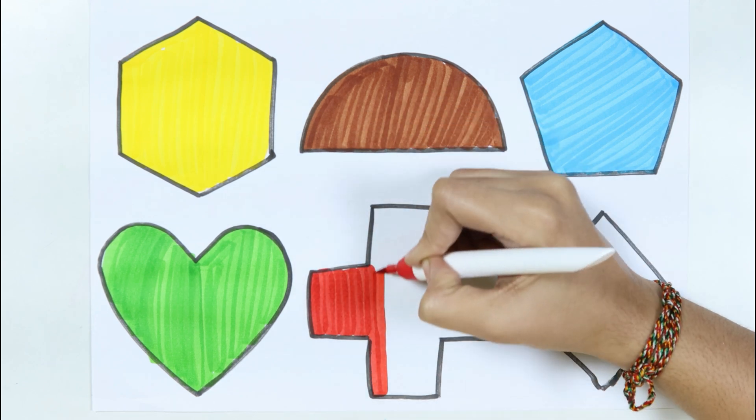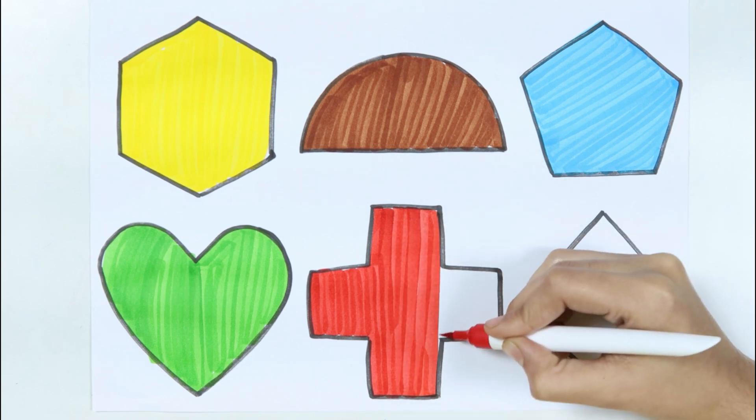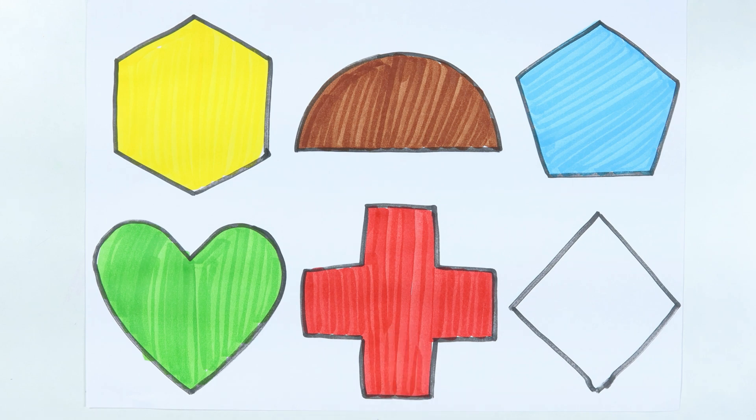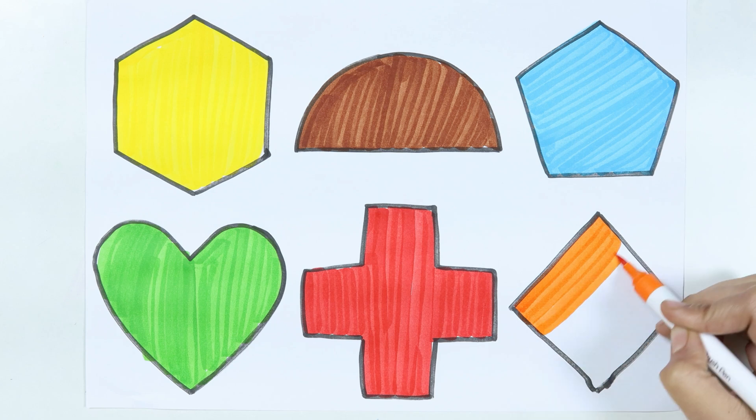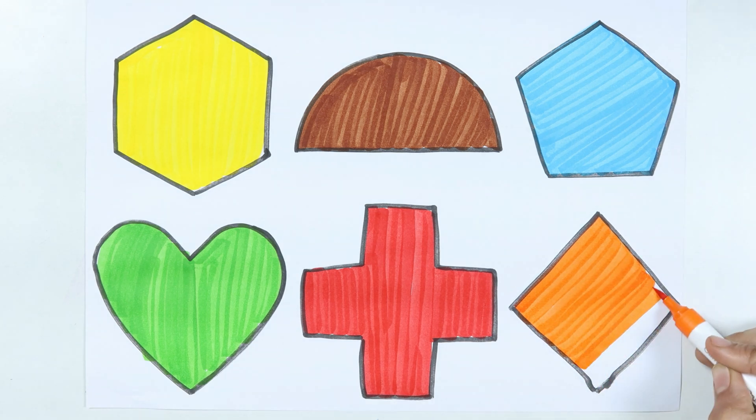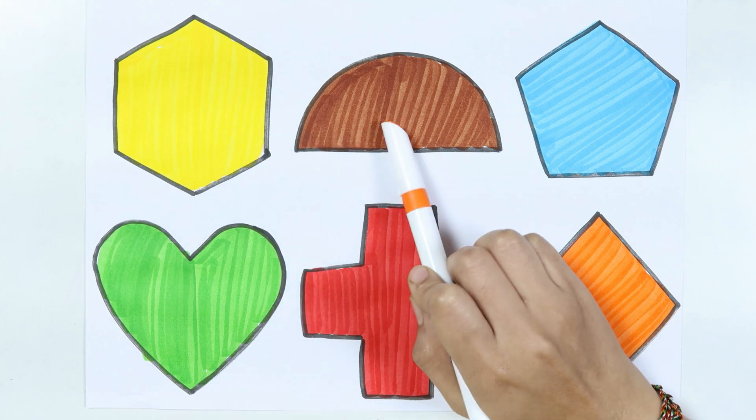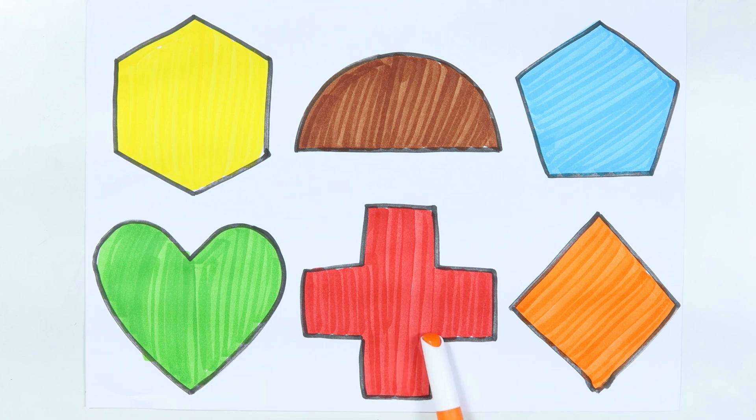Twinkle, twinkle little star. Plus, Orange. Rhombus. Hexagon, Semi-circle, Pentagon, Heart, Plus, Rhombus.